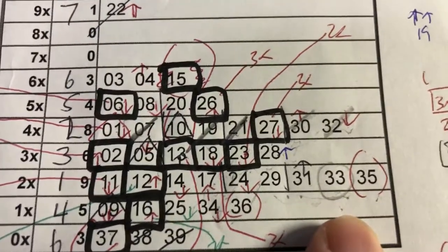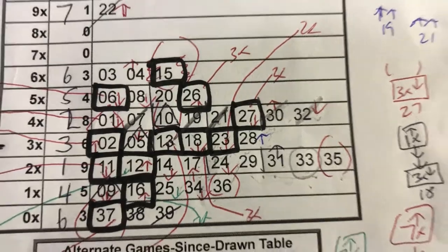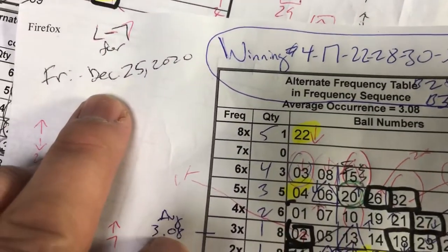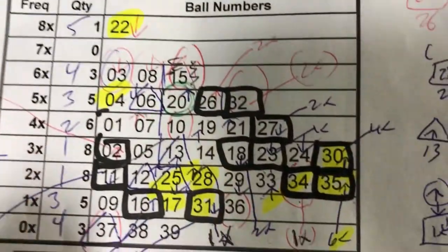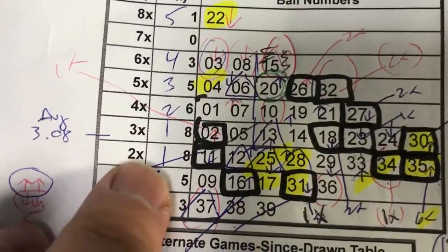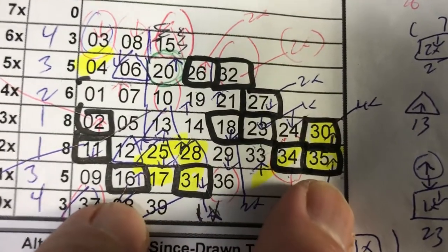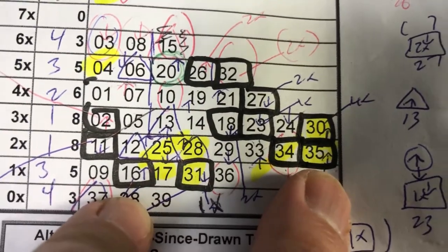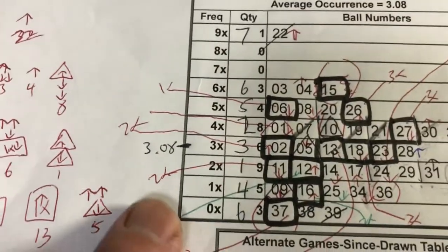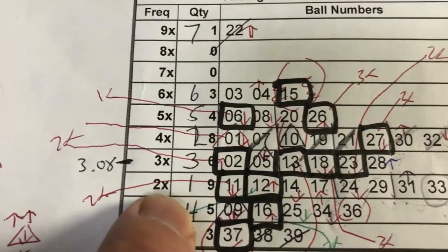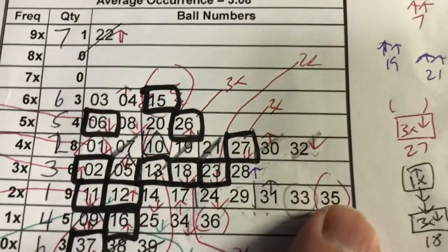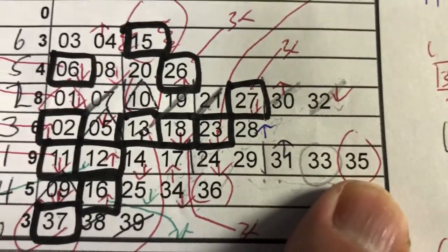So for example, let's go back to December 25th last week. This was for Lotto 7. And this is tier 2x. Number 35 hit. So for the next drawing, 35 is still here.